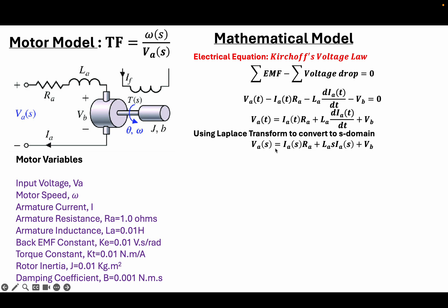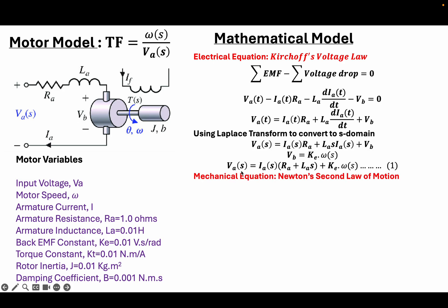Here is the s-domain form of the equation. The back EMF is directly proportional to the speed of the motor, and the constant of proportionality is the back EMF constant Ke. Therefore we have our electrical equation reduced to one equation.